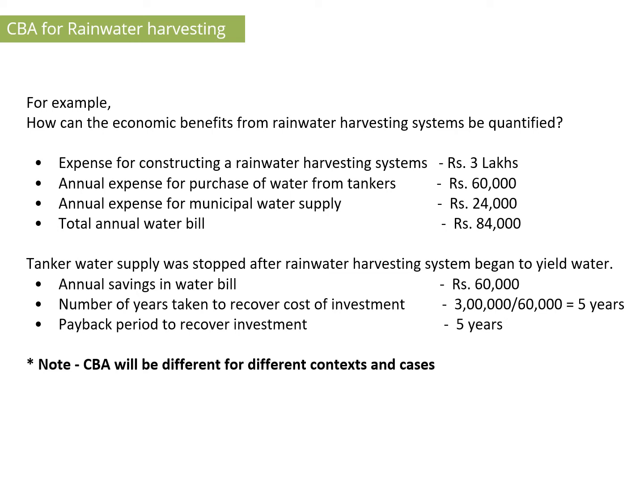There are multiple expenses: the expense for constructing a rainwater harvesting system is ₹3 lakhs; annual expense for purchase of tanker water is ₹60,000; municipal water supply annually is ₹24,000; and the total annual water bill is ₹84,000. After installing the rainwater harvesting system and stopping the use of tanker water supply, the savings in the water bill annually is ₹60,000.